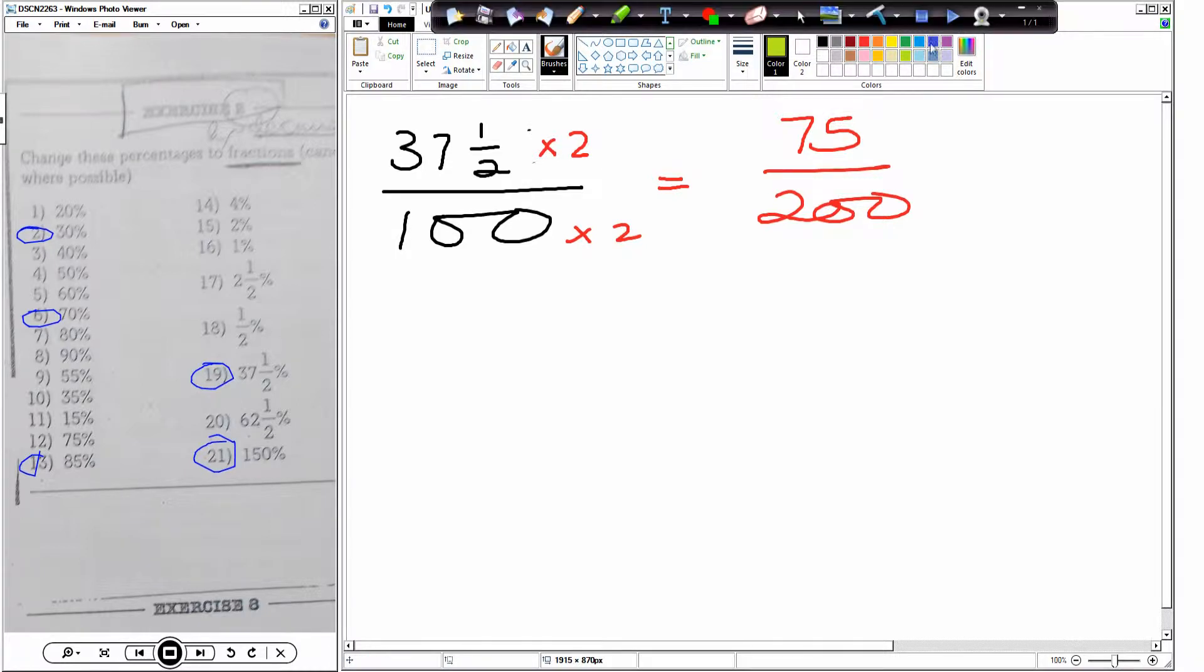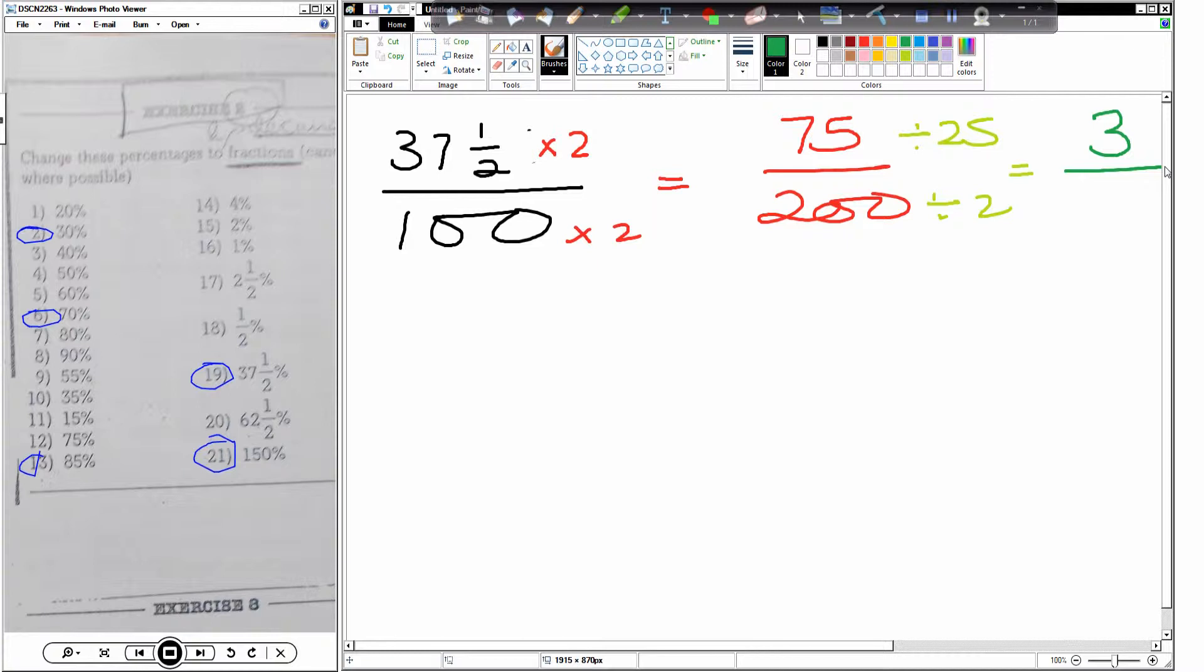Seventy-five over two hundred. So the highest common factor is? What's the biggest number that divides into them? Twenty-five. So seventy-five divided by twenty-five is? Three. Two hundred divided by twenty-five is? Eight. Because four twenty-fives is a hundred. So thirty-seven and a half is three eighths as a fraction.